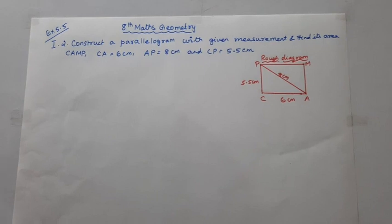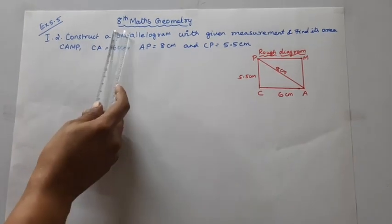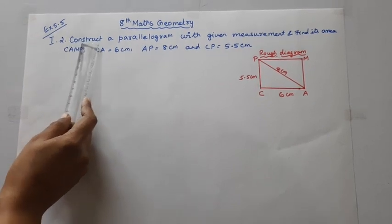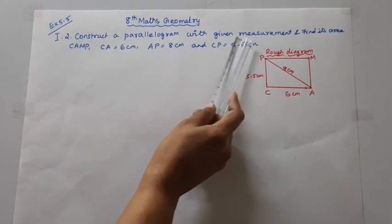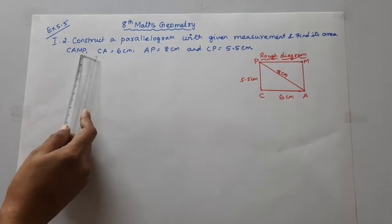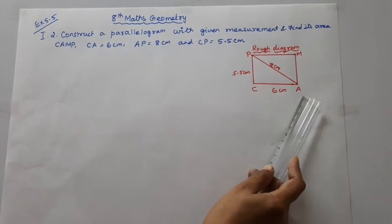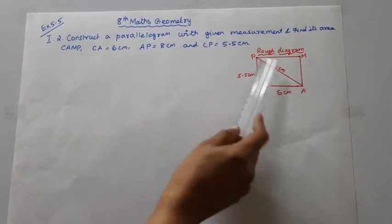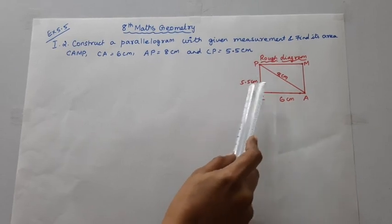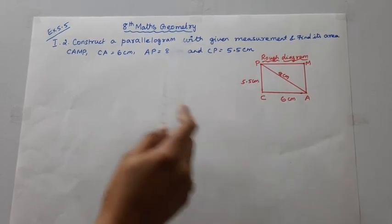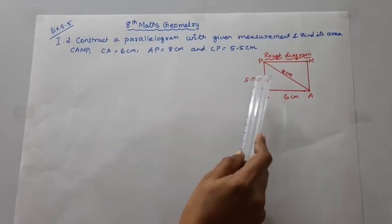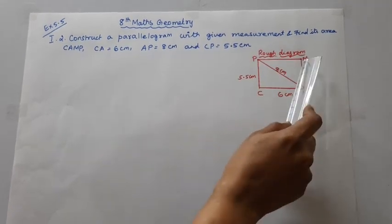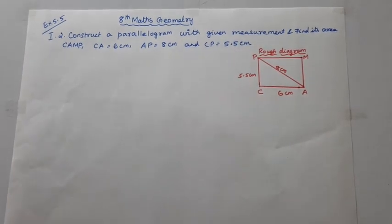Hello students, welcome to Max Tamil channel. 8th standard, Max Geometry, Exercise 5.5, Roman numeral 1, second sum. Construct a parallelogram with given measurements and find its area. CAMP: CA = 6 cm, diagonal AP = 8 cm, CP = 5.5 cm. In parallelogram CAMP, opposite sides are equal, so CA = MP and CM = AP.